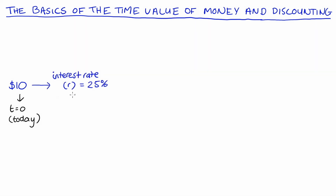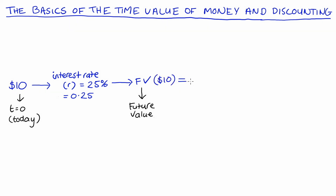Let's say that the interest rate on deposits — we'll call that r — is 25%, so that's 0.25, and for this video just to make it easy we can say it's per year. If we put our ten dollars in the bank, then for the year we can earn 25% of the value of our deposit in a year's time.